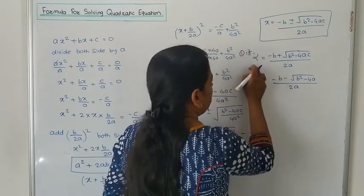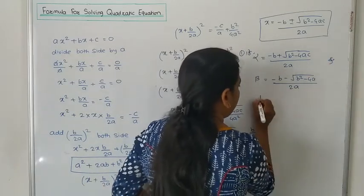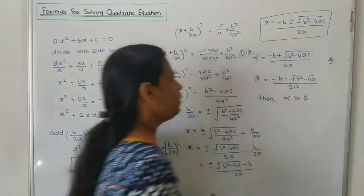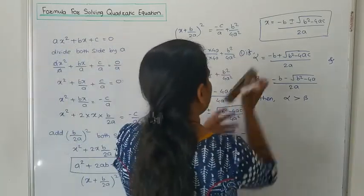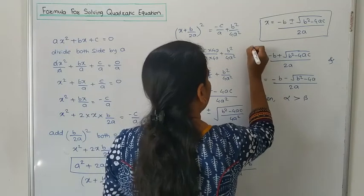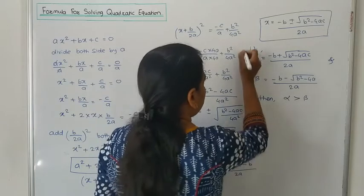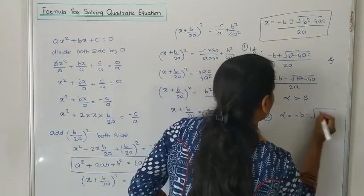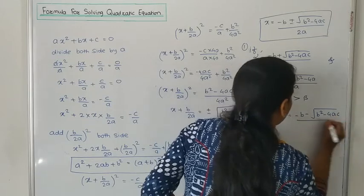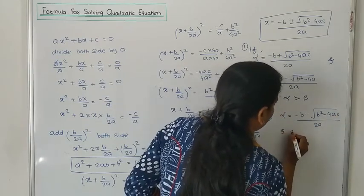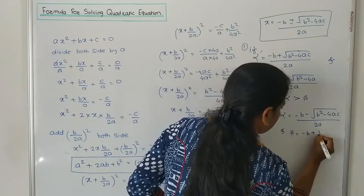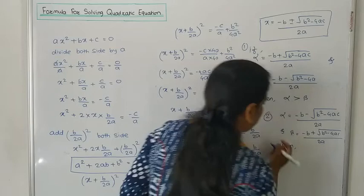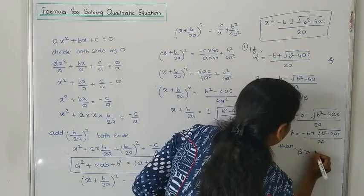First condition: if alpha equals (-B + √(B²-4AC))/2A and beta equals (-B - √(B²-4AC))/2A, then alpha is greater than beta because the positive value is always greater than the negative value. Second condition: if alpha equals (-B - √(B²-4AC))/2A and beta equals (-B + √(B²-4AC))/2A, then beta is greater than alpha.